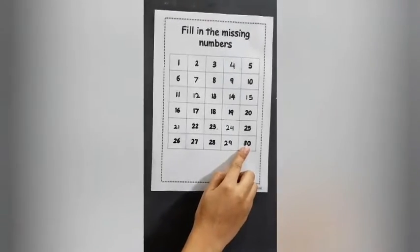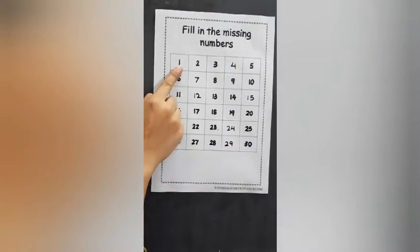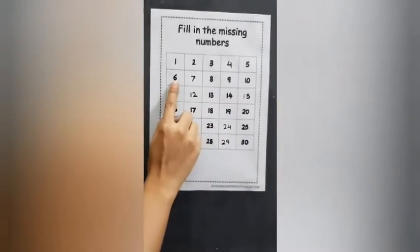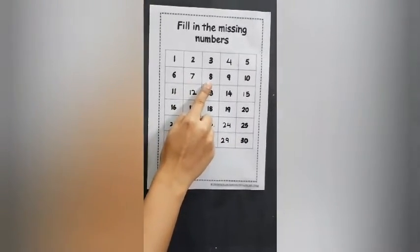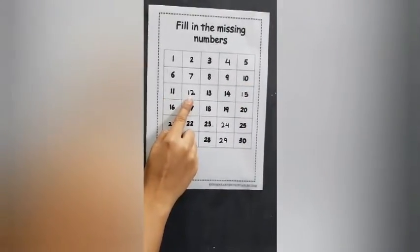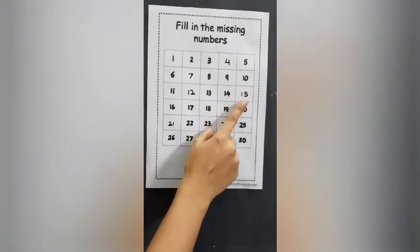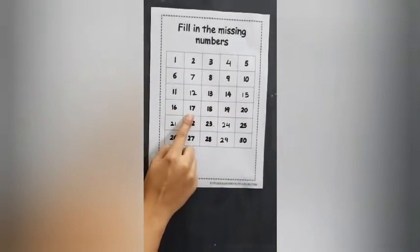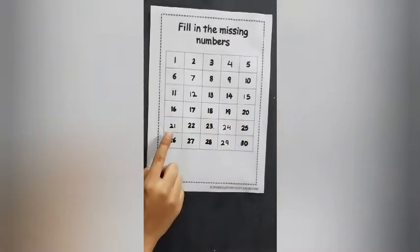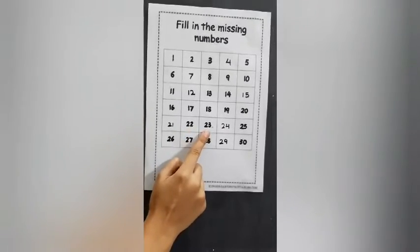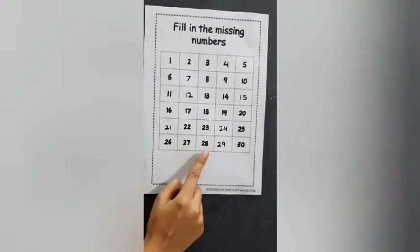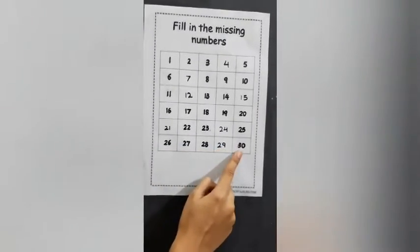And 30. Now let's repeat the numbers: 1, 2, 3, 4, 5, 6, 7, 8, 9, 10, 11, 12, 13, 14, 15, 16, 17, 18, 19, 20, 21, 22, 23, 24, 25, 26, 27, 28, 29, 30.